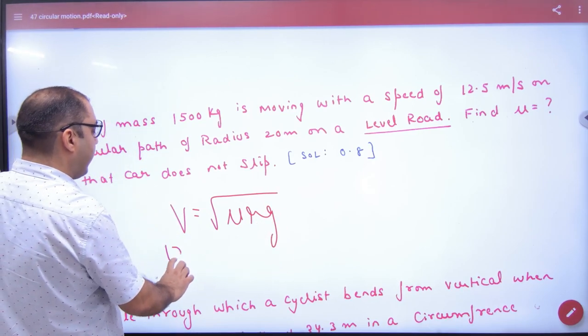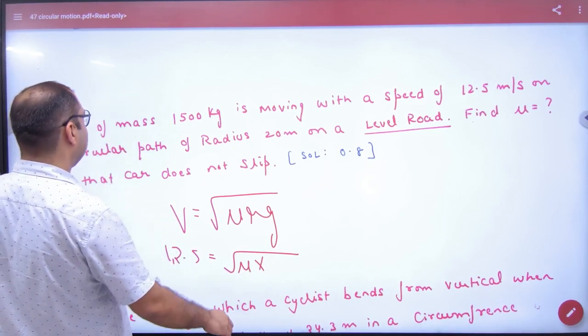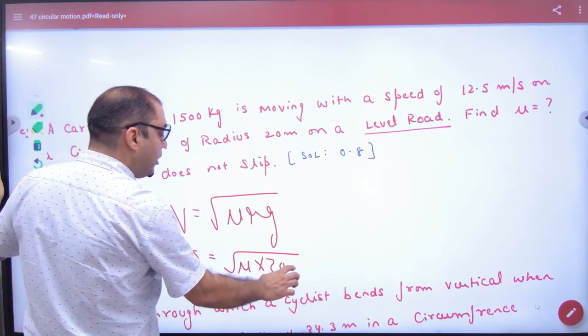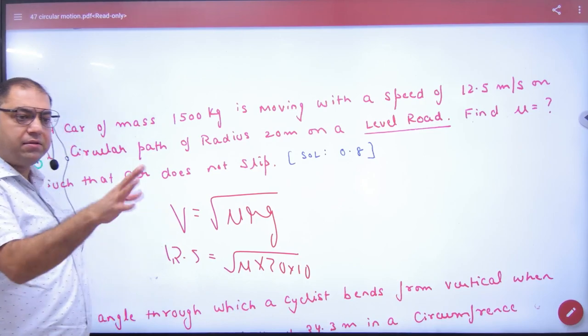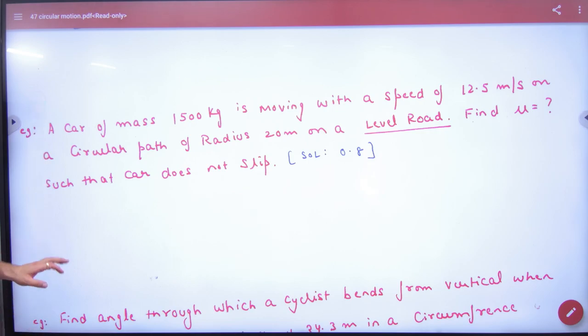V value, what is given? 12.5. Mu is not given. Radius is given, 20. And G is given. So mu is to find. Mass is not needed. Why do we need force of friction? Where do we need force of friction? Force is not needed at all.